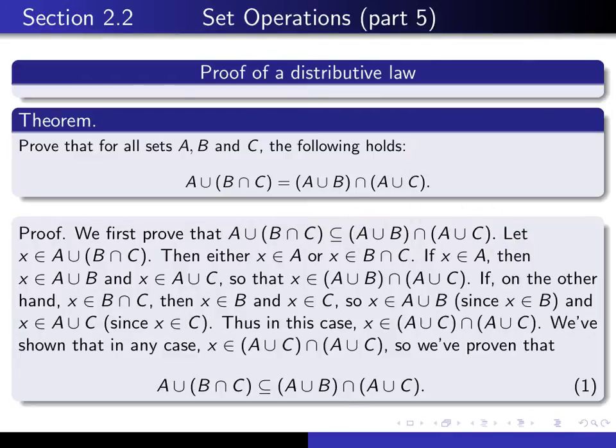So I begin by saying, let x be an element of this left-hand set. And now I have to use the definition of this union here. So by definition, that means that either x is in A, or x is in B intersected with C.